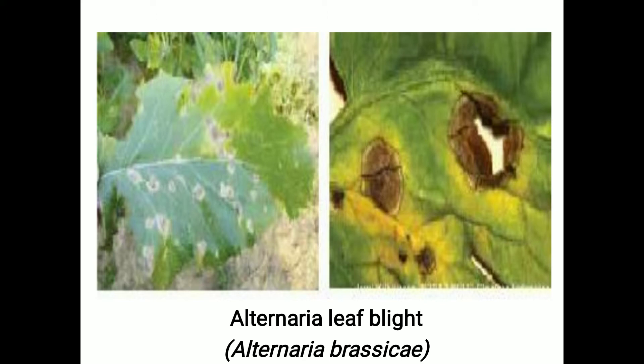Regarding symptoms, the leaf spots of Alternaria brassicola appear as small dark-colored areas — small brown colored spots. These increase in size, becoming circular, and the brown to black colored spots coalesce with each other, resulting in large lesions observed on the leaves.